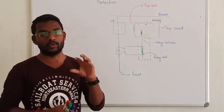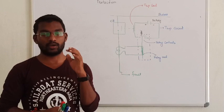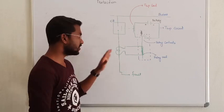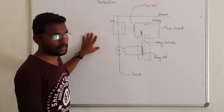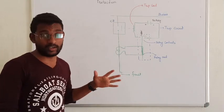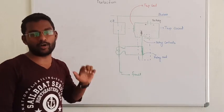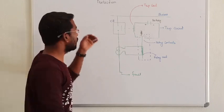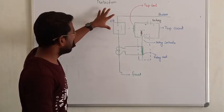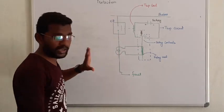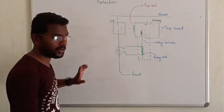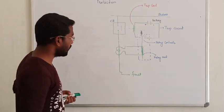From an exam point of view, we usually have a circuit breaker and relay. How can we operate? This is a bus bar. In the bus bar, we have a transmission line. This is a transmission line.